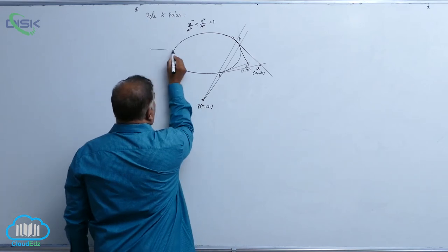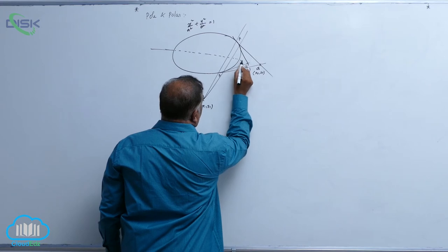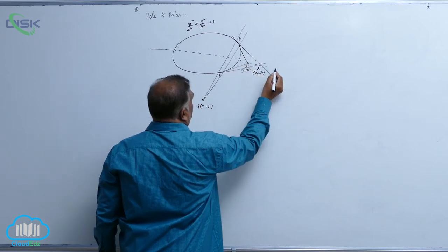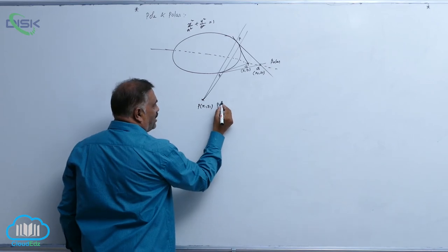So line joining of all these points of intersection, this is called polar arc and this point is called pole.